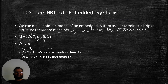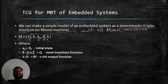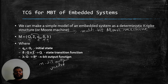The transition function delta tells us the next state on an input symbol when read from some current state, which will be an element of Q. Then we have lambda, our output function, which maps every state to an n-bit output vector. For a one-bit machine, n is equal to one. For a simple one-bit machine, q-naught is our initial state and q1 is some other state. When lambda has n equal to one bit in the output, for example this state has zero output and the next state q1 has one output.